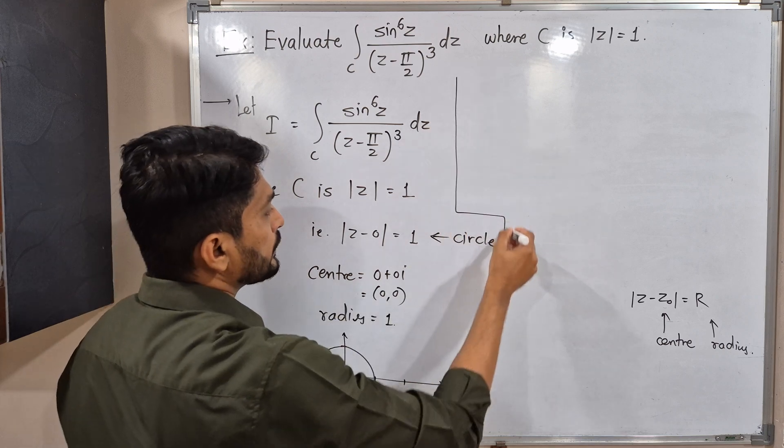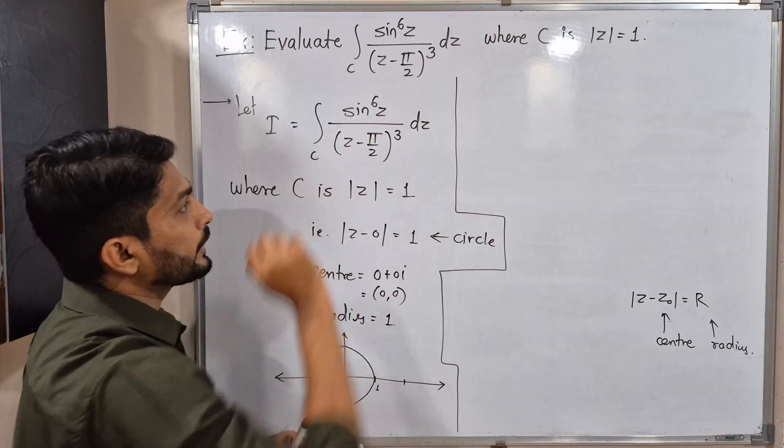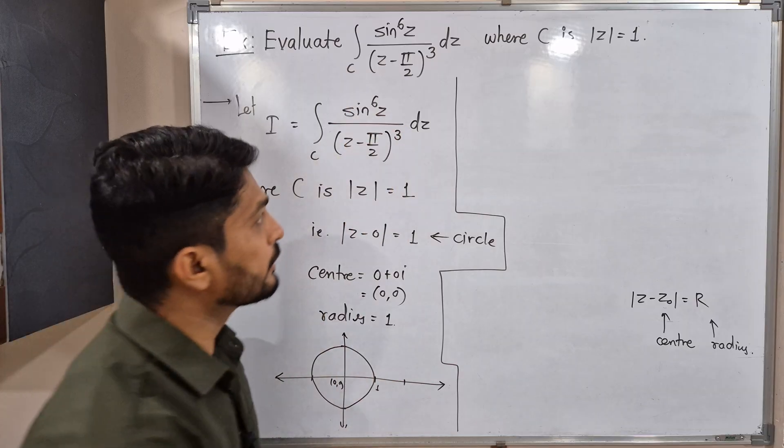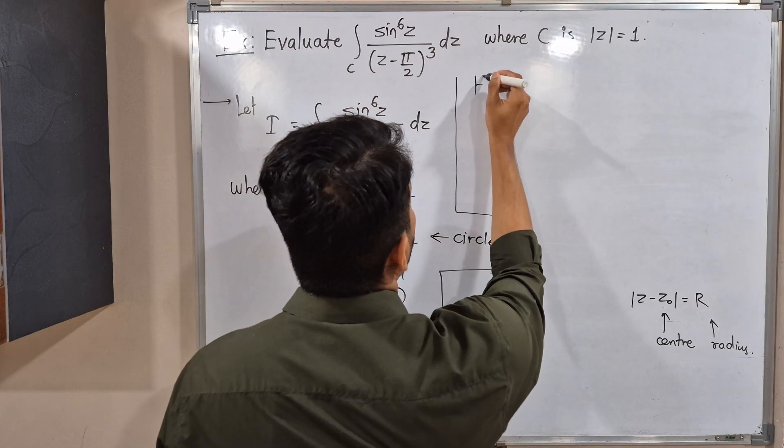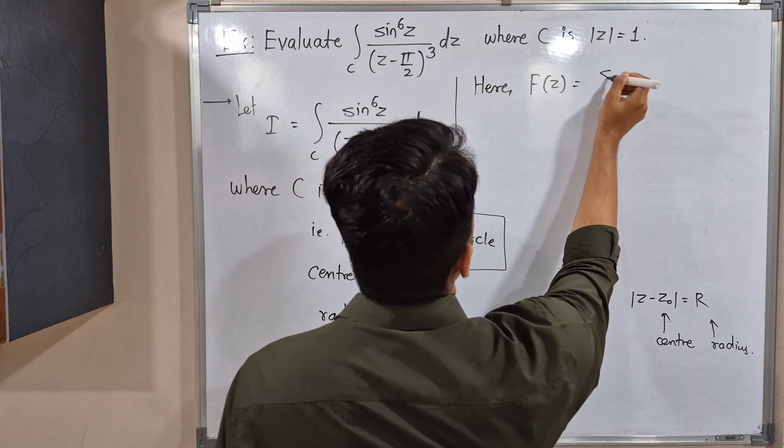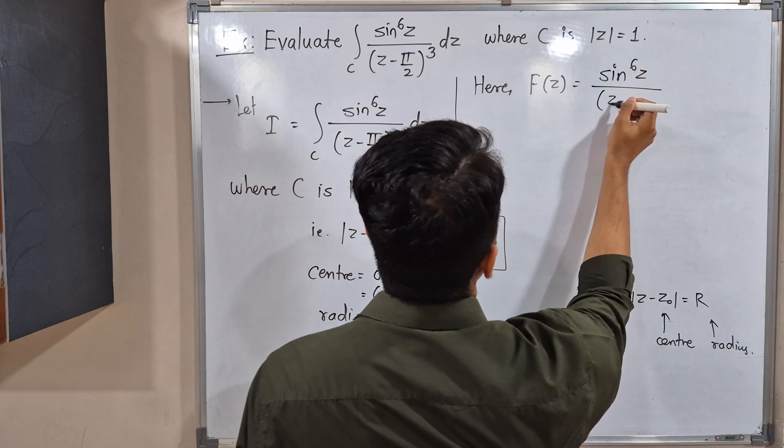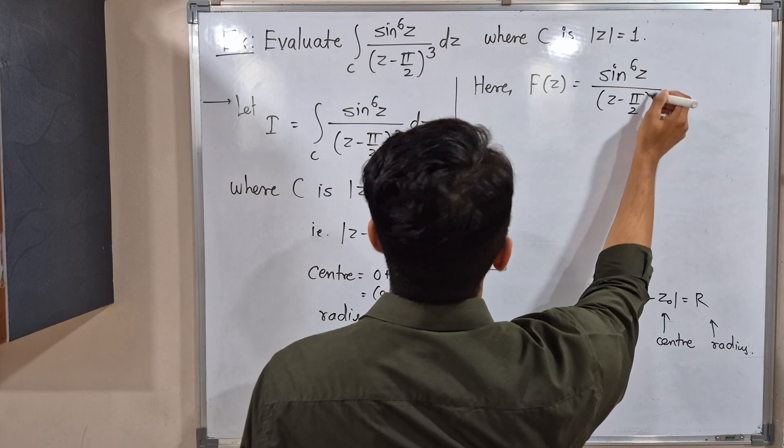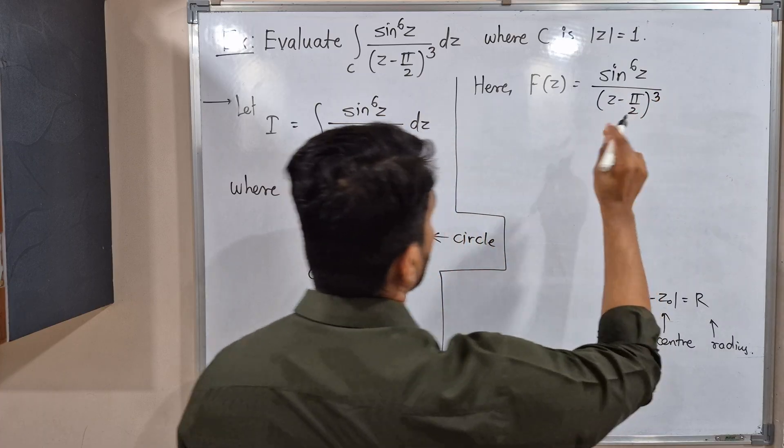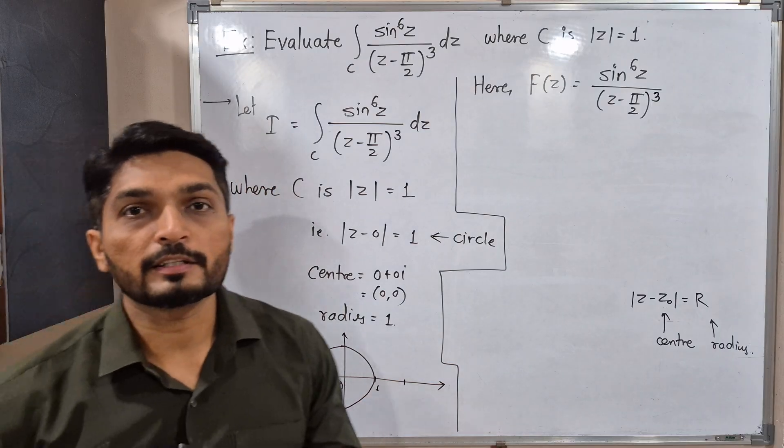Let us move further. Now, this function we will call it as capital F, and we will find its singular points. Here, capital F of z is sin raised to 6z upon z minus π by 2 raised to 3. This is our function.